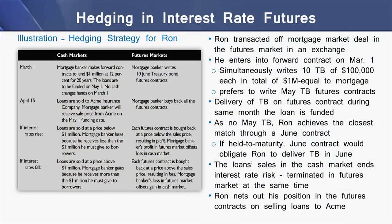We now compare two markets: the cash market and the futures market. In the cash market, Ron transacts his mortgage market deal, and he is entering into a forward contract on March 1. Simultaneously, he is writing 10 Treasury Bond contracts of $100,000 each — a total of $1 million — equal to the whole value of the mortgage loan. Ron is effectively writing May Treasury Bond forward contracts.